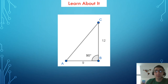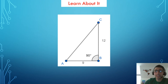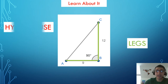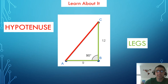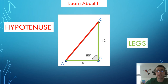Before we apply the Pythagorean theorem, let's talk about a little vocabulary. In the Think About It, I referred to the legs and hypotenuse of the triangle. These are words that are only used with right triangles, where the legs are the two sides that form the 90-degree angle, and the hypotenuse is the side that is opposite the 90-degree angle — in this case, side AC. The hypotenuse will always be the longest side of the right triangle, and this is because of the Pythagorean theorem, which states that in a right triangle, the sum of the squares of the legs is equal to the square of the hypotenuse.